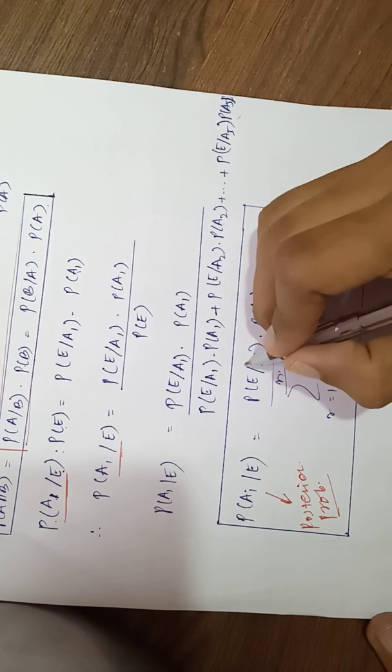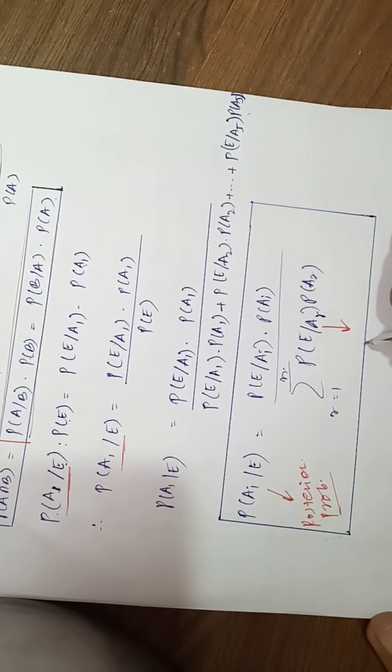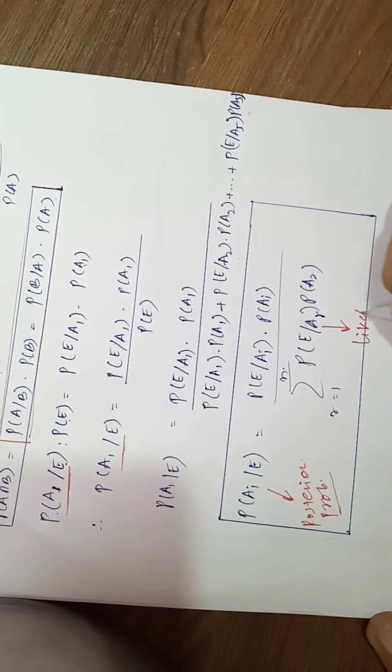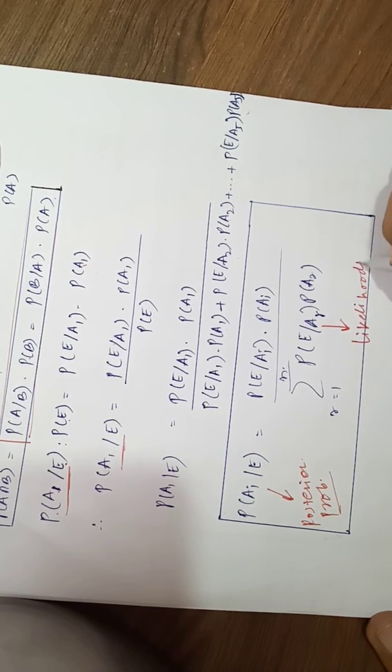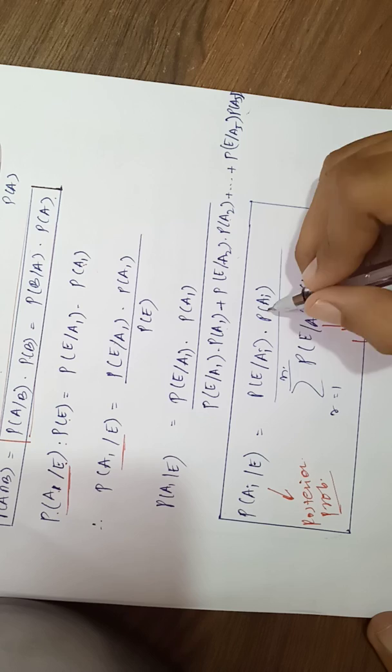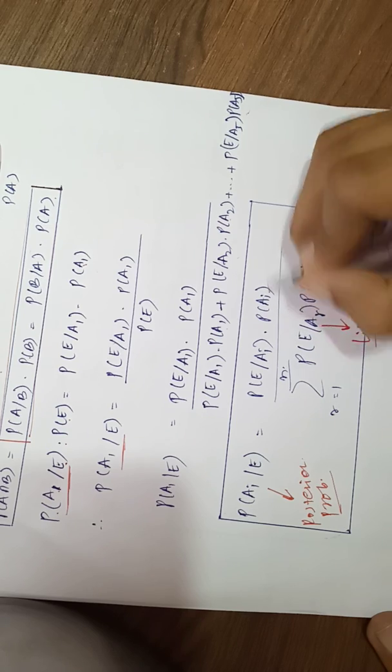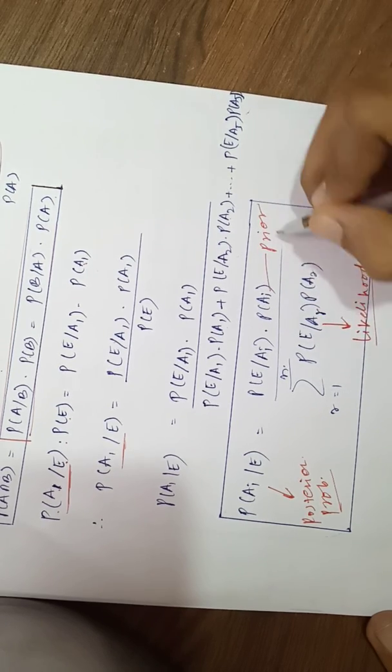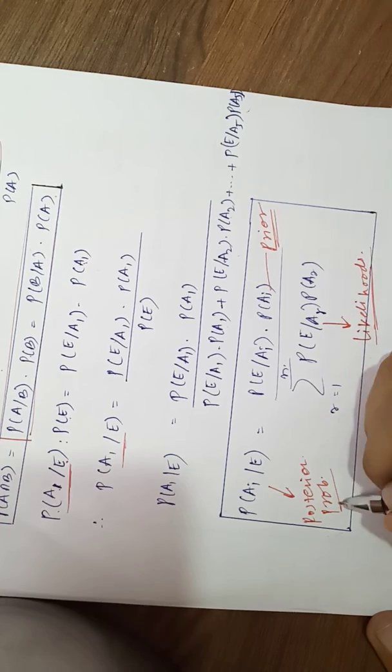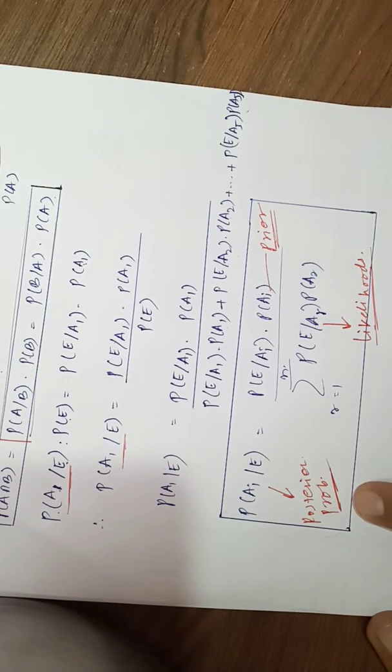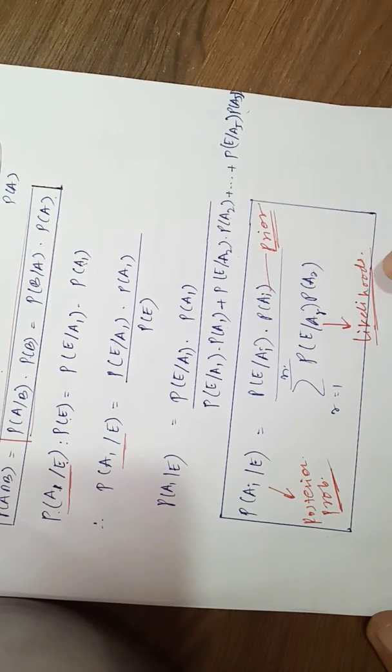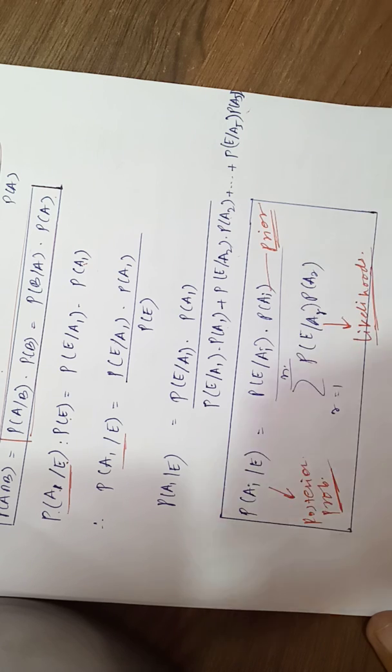E given a1, e given a2, these probabilities we call likelihoods. And probability of a1, a2, a3, a4 - these are prior probabilities. So all three probability terms you can see: posterior is calculated in terms of prior and likelihoods.